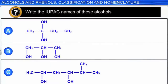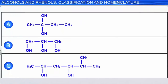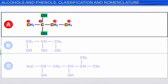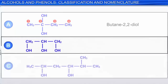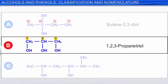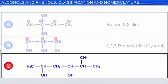Can you write the IUPAC names of these alcohols? Molecule A has a 4-carbon chain and 2 hydroxyl groups attached to carbon 2; its IUPAC name is butane-2,2-diol. Molecule B has a 3-carbon chain with one hydroxyl group on each carbon; its IUPAC name is 1,2,3-propanetriol, and the common name is glycerol. Molecule C has a 6-carbon backbone; counting from the right, there are hydroxyl groups at carbons 2 and 4 and a methyl group at carbon 5, making it 5-methyl-2,4-hexanediol.